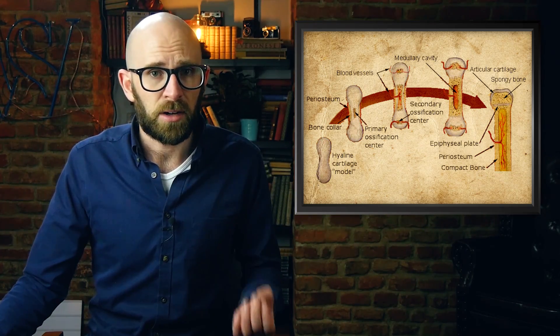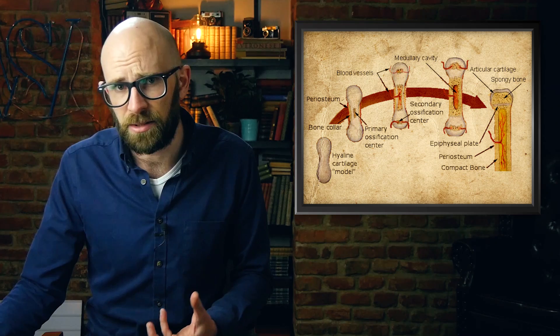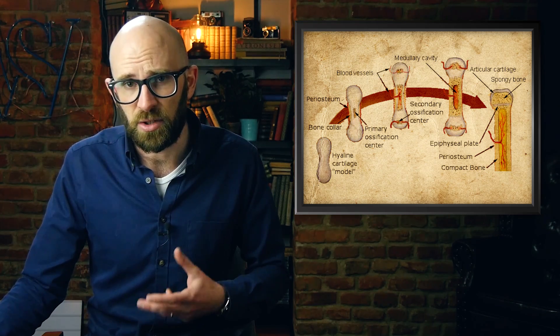All types of cartilage grow in one of two ways: interstitial and appositional. Interstitial growth happens when cartilage is formed by chondrocytes within the cartilage, forming additional matrix. Appositional growth happens by adding new cartilage on the surface, formed from chondrocytes in a dense layer of connective tissue surrounding the cartilage called the perichondrium.